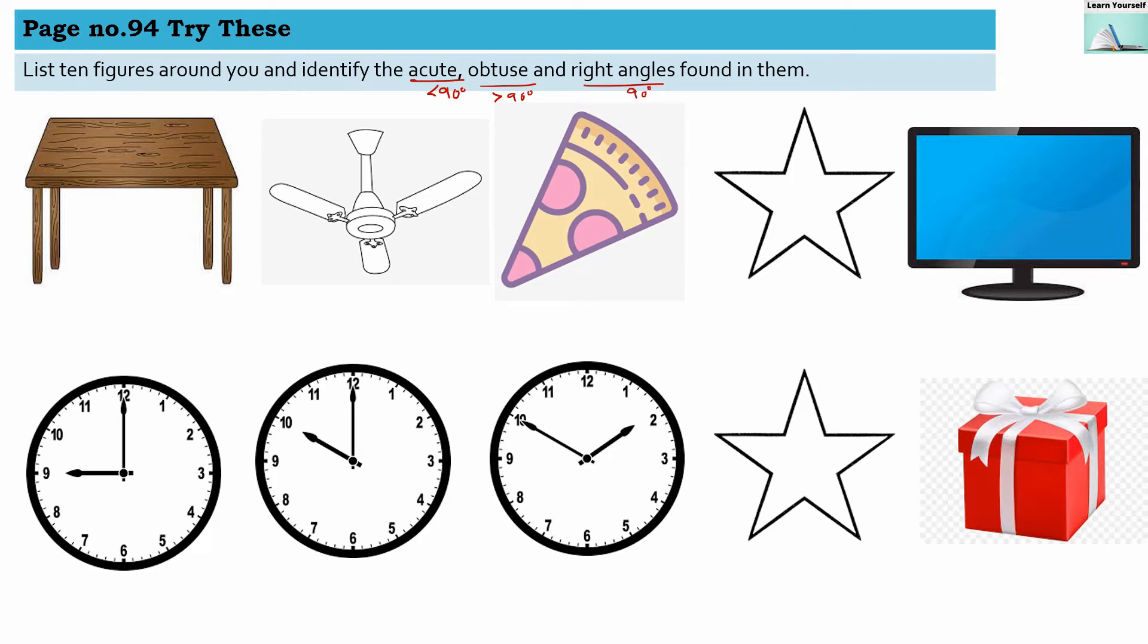Here I have listed some of the objects we can see around us. This is a table. As you can see, this shows a right angle, 90 degrees. In between two blades of a fan, this angle is greater than 90 degrees, so this is an obtuse angle. In a pizza slice, this angle is less than 90 degrees.